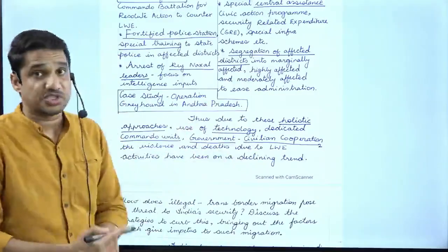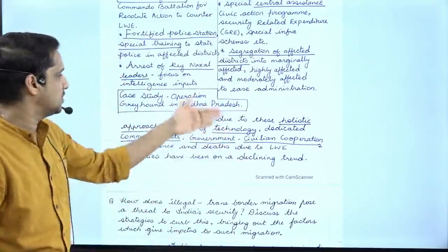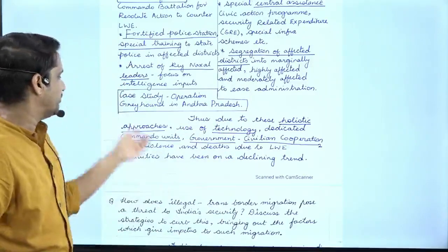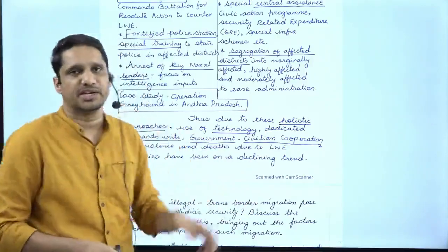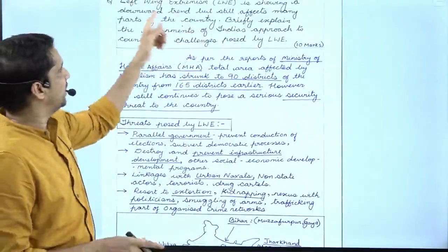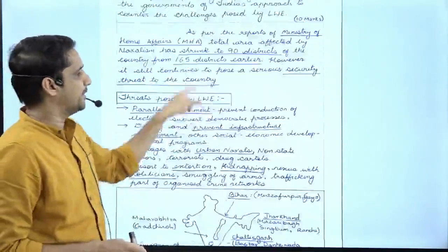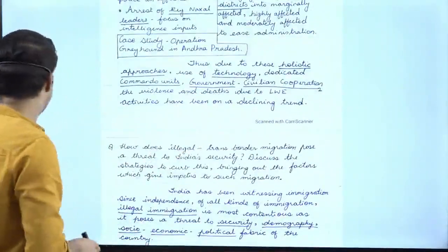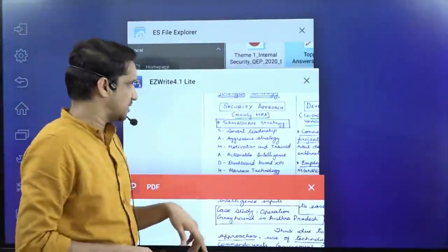At the last, we can mention a futuristic positive way forward. She wrote: thus, due to these holistic approaches, use of technology, dedicated commando units, government-civilian cooperation, the violence as well as deaths due to LWE activities have shown a declining trend. The question mentions a downward trend. In the introduction, she showed the fact, and in the way forward, she mentioned how to further decrease it. So very well-written answer.